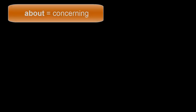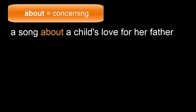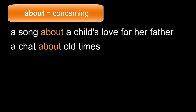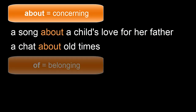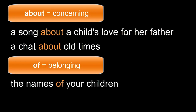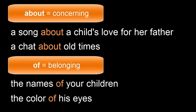If you remember 'about' means 'concerning,' you'll understand why that preposition needs to be used in these examples: a song about a child's love for her father, a chat about old times. And if you remember 'of' expresses belonging, then you'll understand these examples: the names of your children, the color of his eyes.